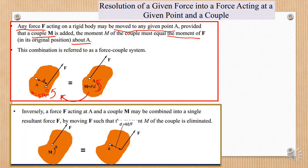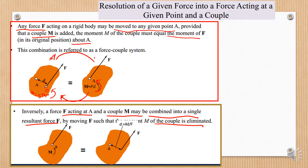Inversely, the force acting at A and a couple may be combined into a single resultant force, and the couple can be eliminated. So after we move it, if we want to go back, yes, we can — we can get one resultant force equal to the couple we had before. So this one can be turned into that one, and it may also return back.